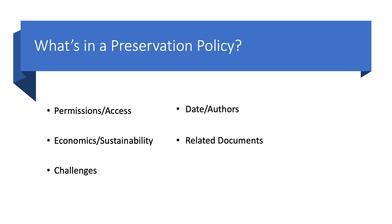The Date or Authors section documents the last revision date and provides contact information for the authors. The Related Documents section lists other institutional documentation that has a relationship to this digital preservation policy. And the Definitions or Glossary section clarifies terms used in the policy that non-specialists may not know. This is just a representative sample of the categories of information found in numerous preservation policy documents created by libraries, archives, and museums.